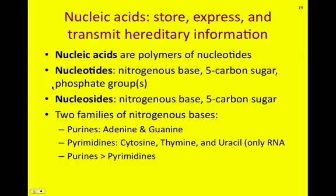There are two families of nitrogenous bases, or nitrogen bases. The first group is known as the purines, and your two examples of purines are adenine and guanine — or as you may know them, A and G.